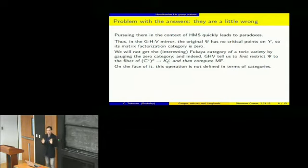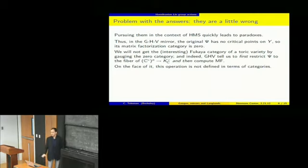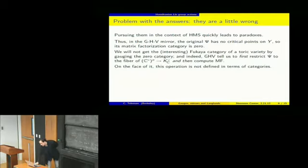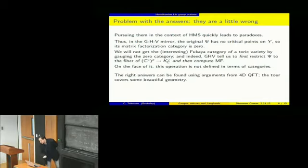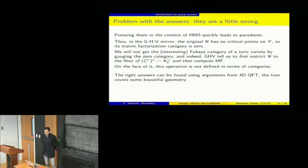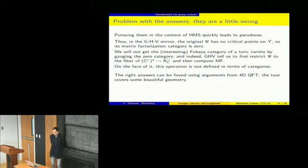That's not what the Hori-Vafa recipe tells us to do. It tells us to first restrict the superpotential to the fiber and then compute the category — not the other way around. But when we say it that way, it's no longer an operation described purely in terms of categories — it requires the underlying spaces. So the step of replacing a space with a category seems to have caused trouble.